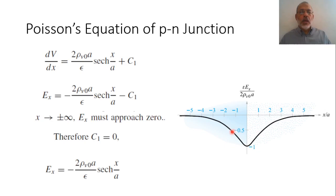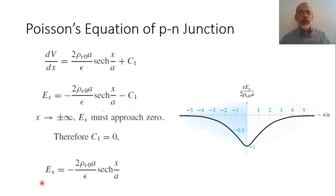As x tends to plus or negative infinity, the electric field must be zero. So we apply the boundary condition that as x tends to plus or minus infinity, Ex equals zero. From this, we find that the constant C1 is zero. Therefore, the electric field is minus (rho_V0 * A / epsilon) * sech(x/A).